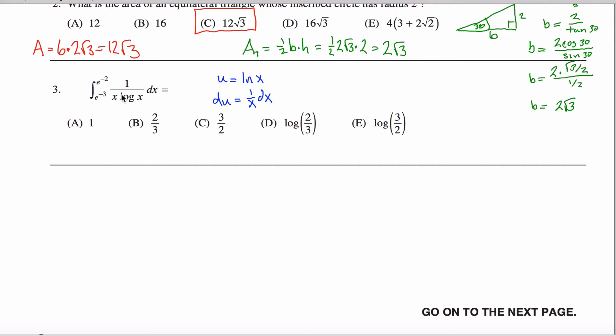And now with that substitution, I can rewrite my integral here. Sorry if you're a teacher and you're going to get picky at this step, but you can deal with it. I'm going to say x equals e to the negative 3, and x equals e to the negative 2, rather than rewrite these bounds of integration in terms of u, because I'm going to switch them back to x's before I evaluate it, so why bother?